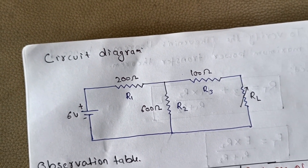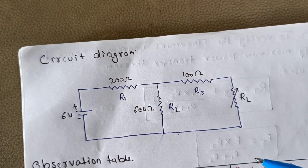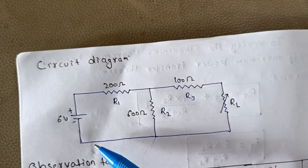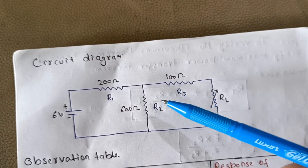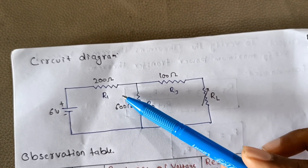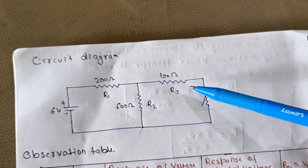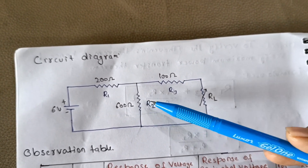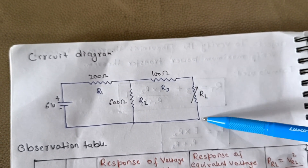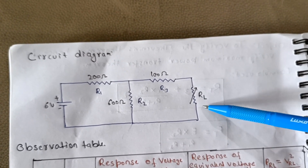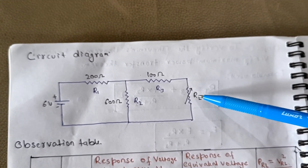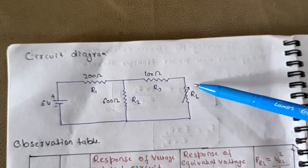Now I would like to show you the circuit diagram. We are using a low voltage supply of 6 volts and three resistances: R1, R2, and R3. R1 is 200 ohm, R2 is 600 ohm, and R3 is 100 ohm. R1 and R2 are in series, and R3 is connected in parallel. We have connected a load resistance across this, and we would like to measure the output voltage of this original circuit using a multimeter from these two points.